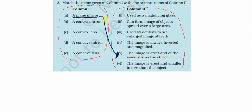Next is a convex mirror. If we talk about a convex mirror: used as a magnifying glass — this is wrong. Next: can form image of objects spread over a large area — this is true, because a convex mirror is used as a vehicle's rear view mirror, forming a wide-area image.